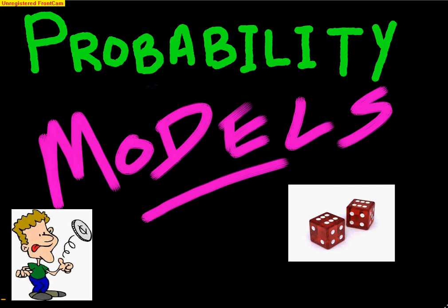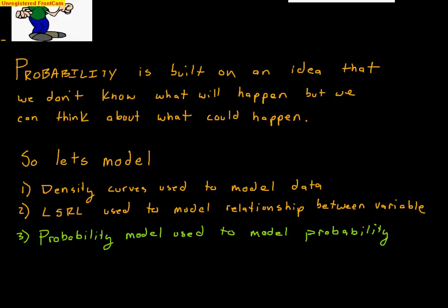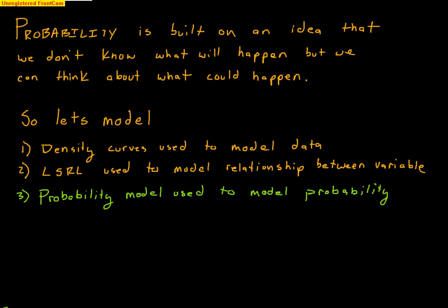This video is about probability models. It's our second video about probability, and this one starts making probability hopefully very easy. Probability is built on an idea that we don't know what will happen, but we can think about what could happen. Anything called a chance process means that the outcome is purely chance. So let's do the one thing we're pretty good at right now in this class: modeling.